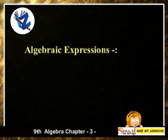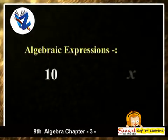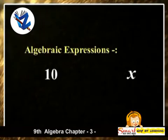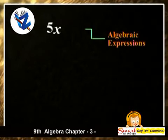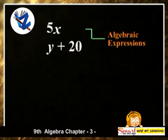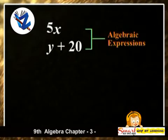The algebraic expression is a combination of numbers and variables involving mathematical operations. So, 5x is an algebraic expression and y plus 20 is also an algebraic expression.